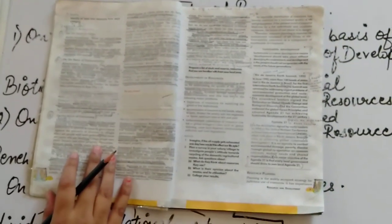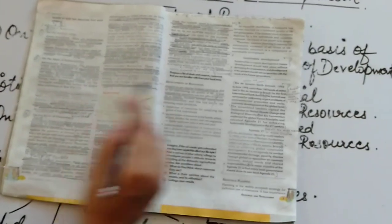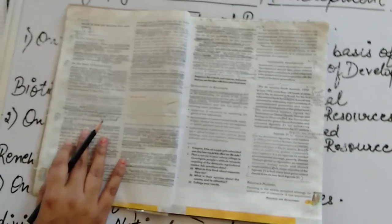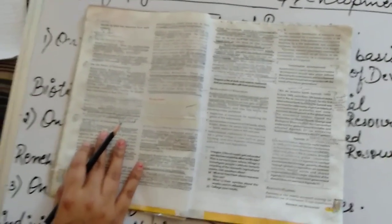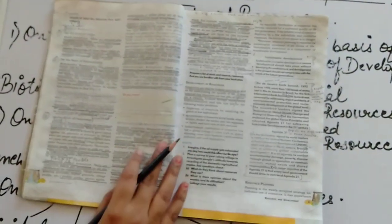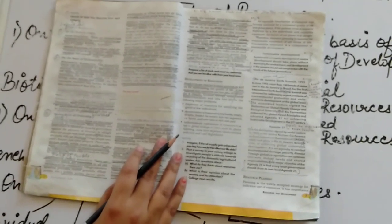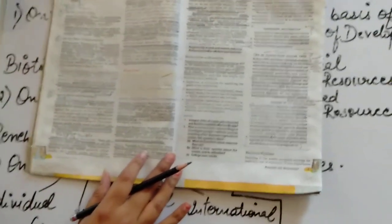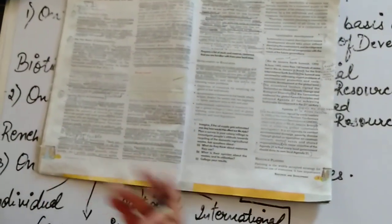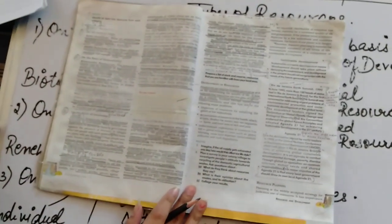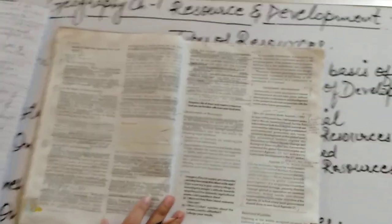I hope you are clear with the types of resources. Let's move ahead to development of resource. You know that very much. How important the resources are for us. And it is said that they are the free gifts of nature. And we all know ki jaise hi human being ko kuch free mein milta hai, wo usko kis tarah se use karna start kar deta hai. This is the same problem we are facing with the resources as well.